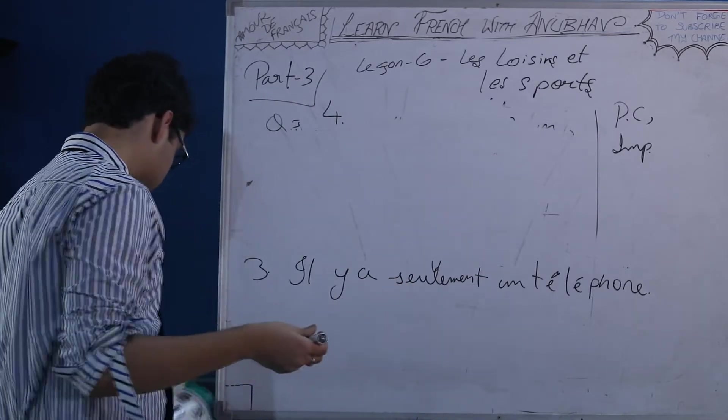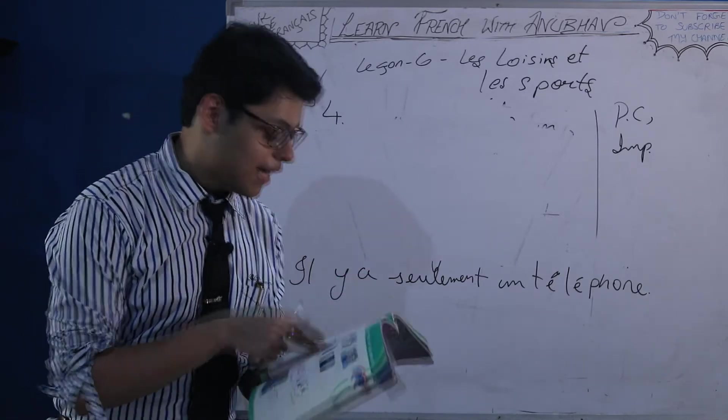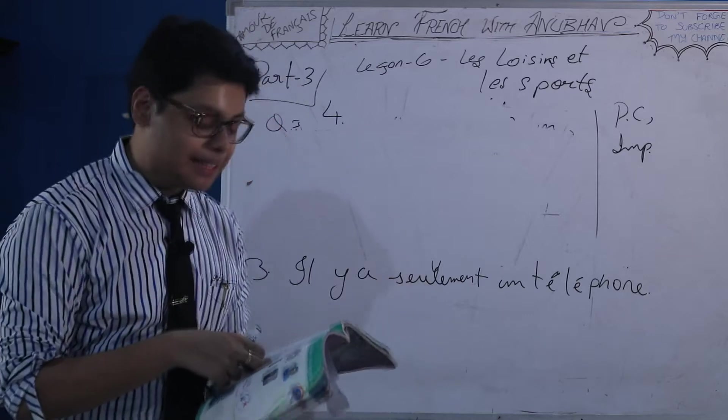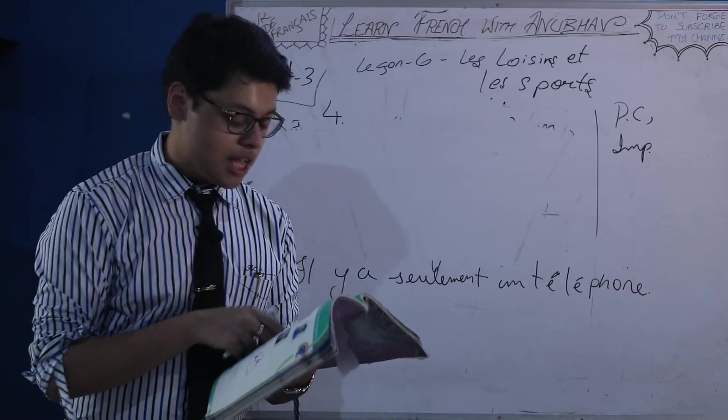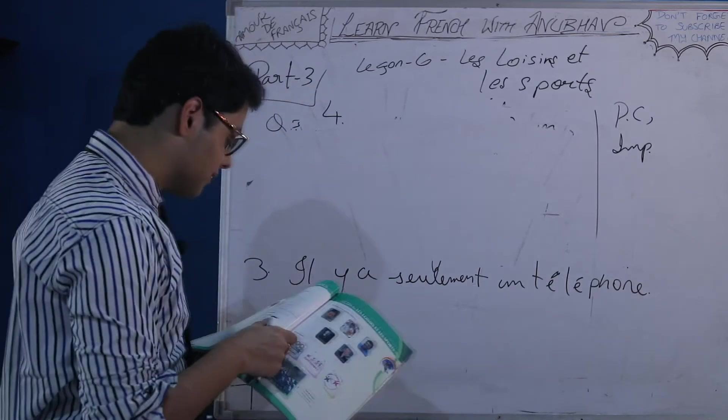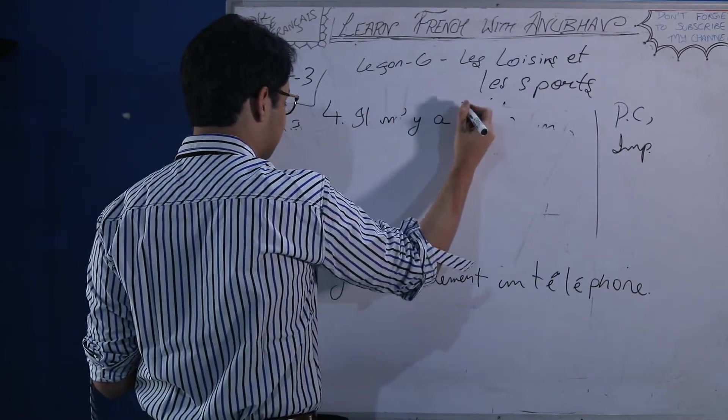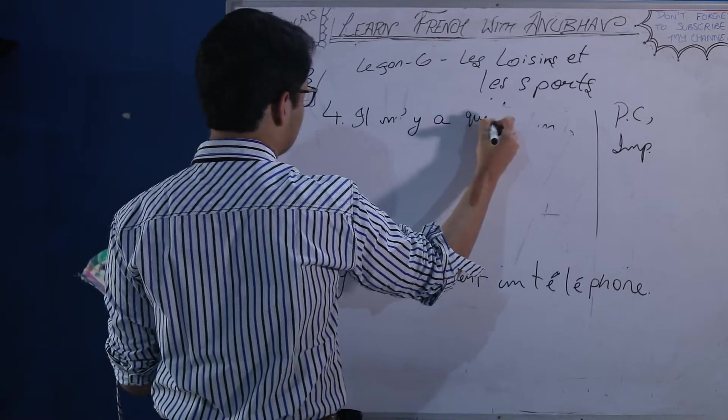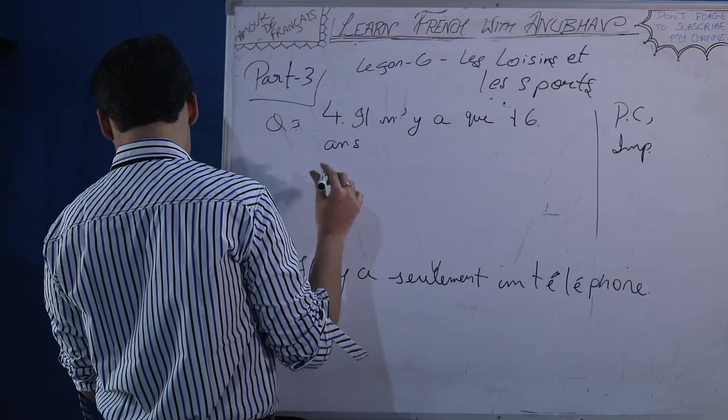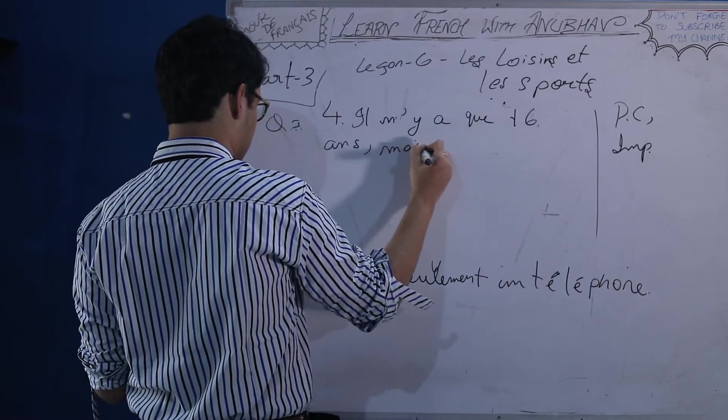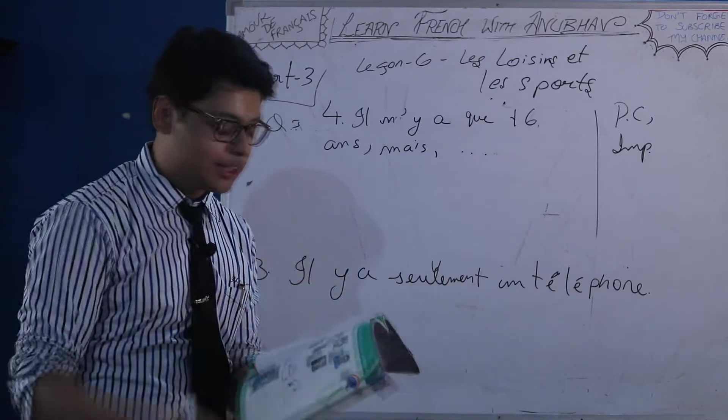And the last one is fourth. Il a silmo saiz oon ma il a gai ne lapri purso kurash exemplar. Like he is only 16 years old but he earned a prize for his exemplary courage. So answer will be he is only 16 years old. Il nia ka saiz oon ma il a gai ne lapri purso kurash exemplar. The same sentence will continue. Moving towards question number 4.